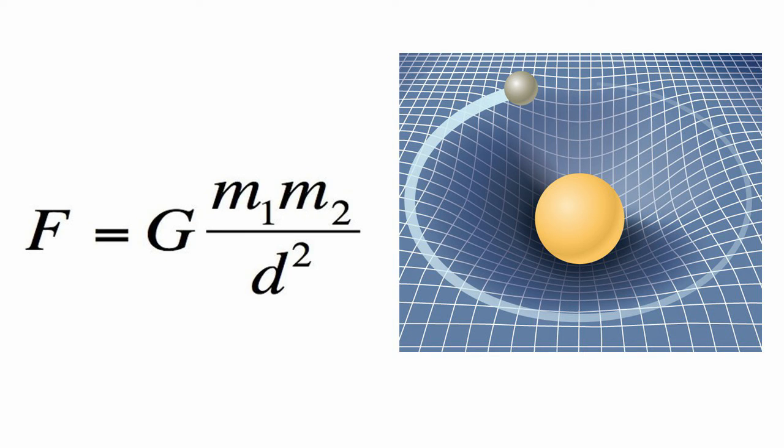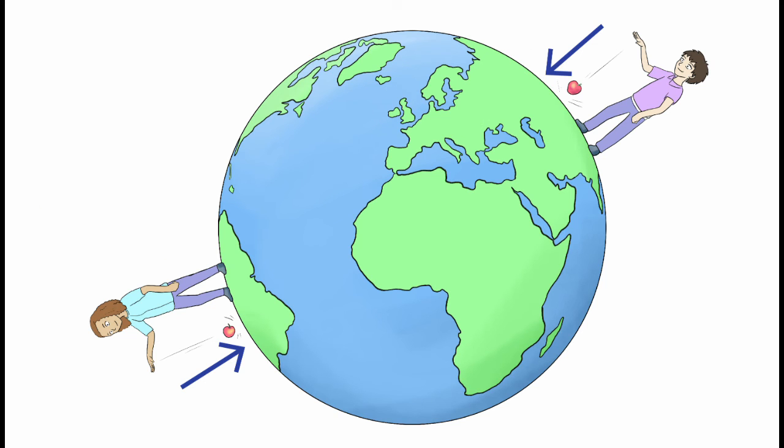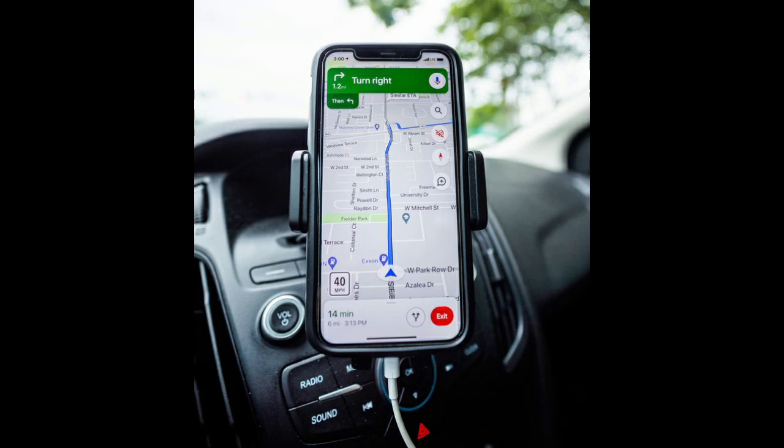To sum up, gravity is both a theory and a law. Objects fall to the center. Satellites exist. And GPS works to pinpoint accuracy, thanks to gravity.